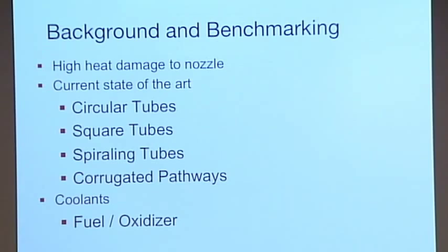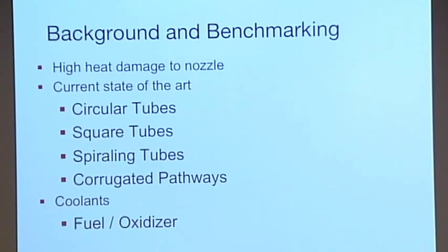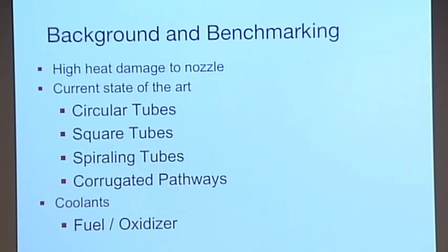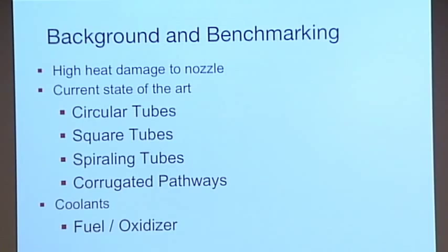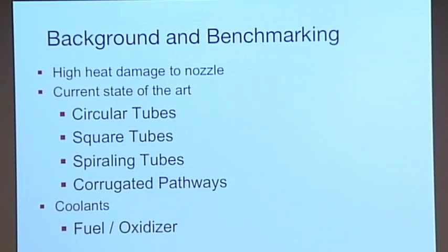Next, we thought about spiraling tubes, which is a coil around the nozzle. And then finally, corrugated pathways. You can just imagine a sheet of metal that's really wavy, and you wrap that around the nozzle and pass the fluid through it. This is the best technique because it provides a lot of surface area for the cooling, but it's also very hard to do. And finally, like I said before, we have to use the fuel or the oxidizer because this is what makes it regenerative cooling.